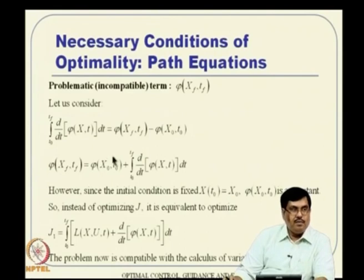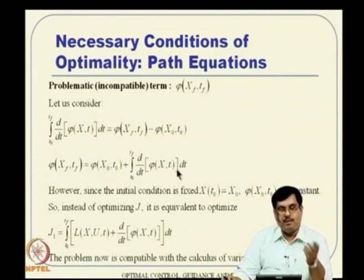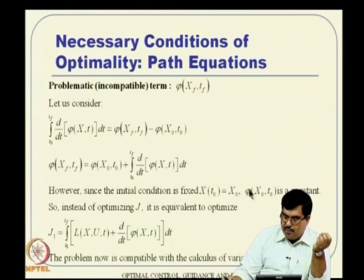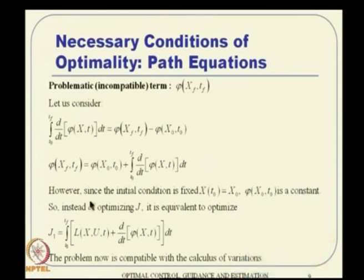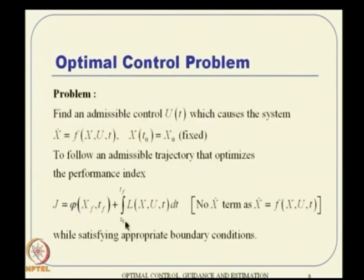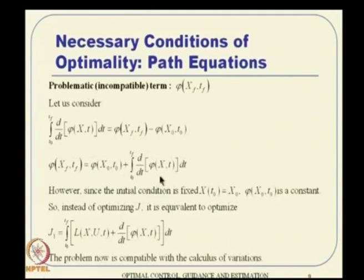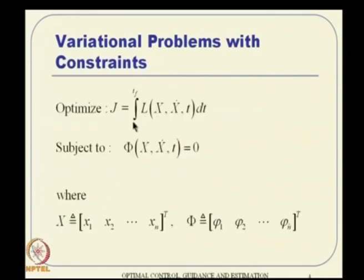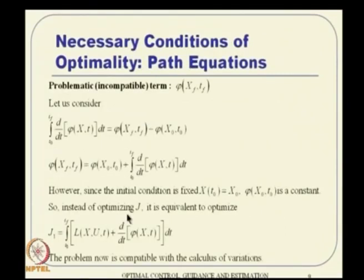Since phi evaluated at the initial condition is a constant, it is irrelevant for optimization. So instead of optimizing J directly, it is equivalent to optimize J1 ignoring that constant. We ignore that term and combine both integral terms together, making this compatible with what we already know from calculus of variations — no terms outside the integral.